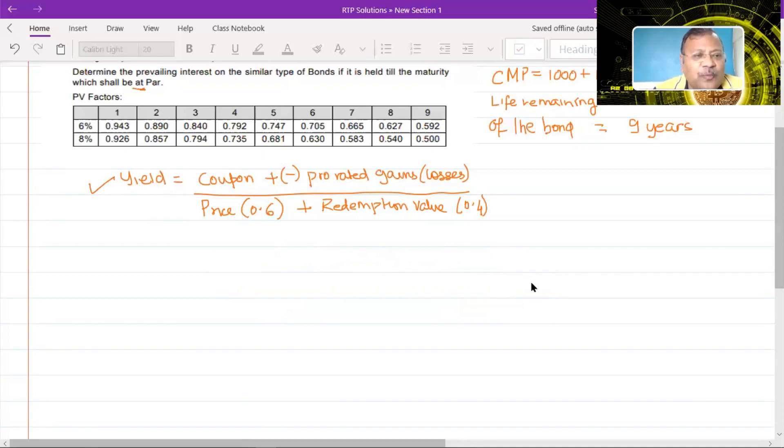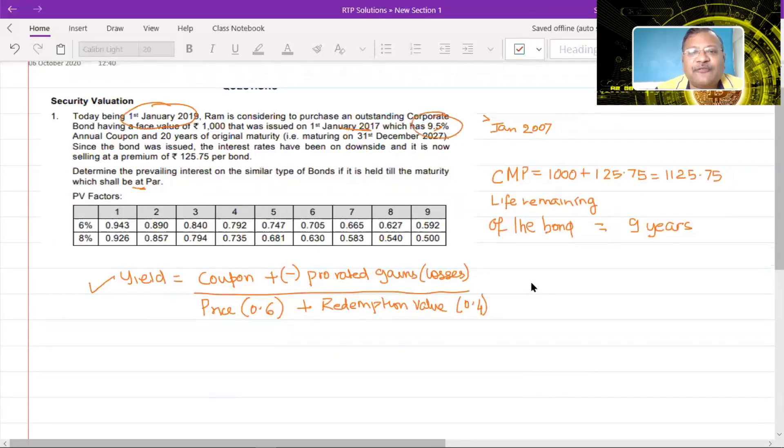Now let's look at each of these details which we require here. First of all, coupon. We know that the coupon is 9.5% on a face value of 1,000. So that means you will receive a coupon of Rs. 95. Now plus or minus prorated gain. So if it is a gain, you will add it to the coupon and if it's a loss, you will reduce it from the coupon.